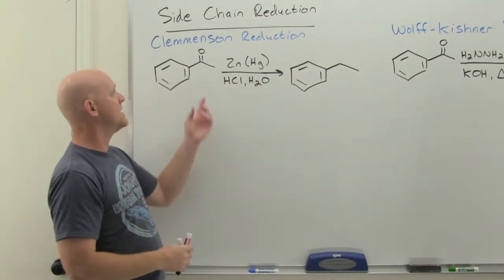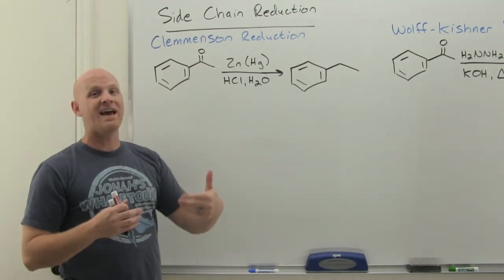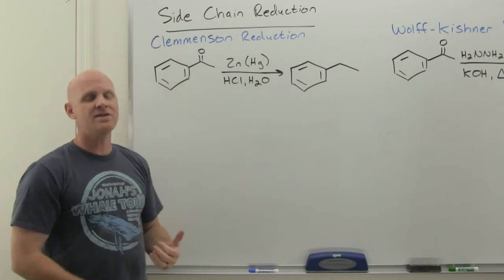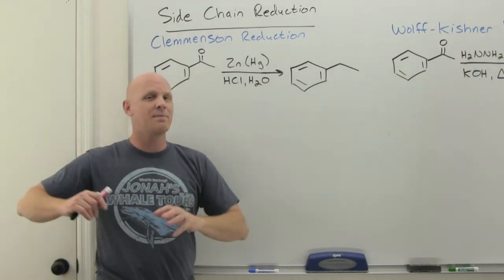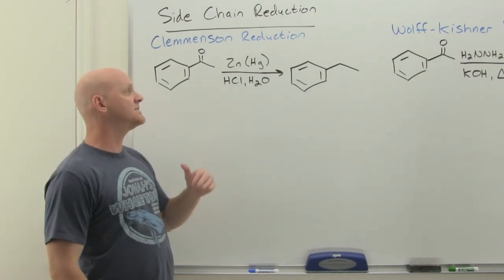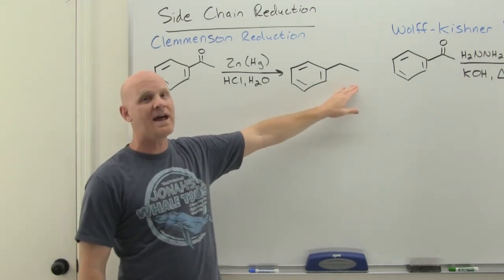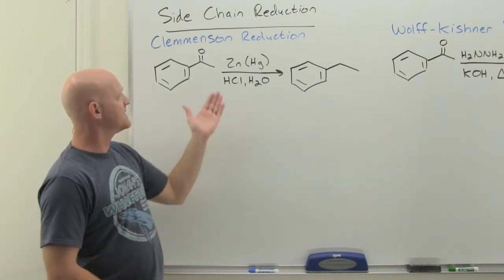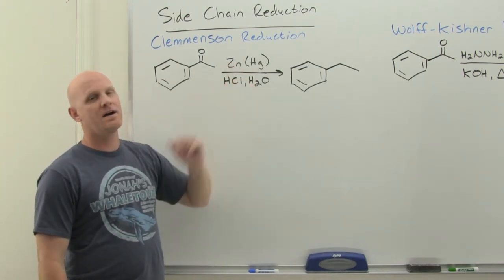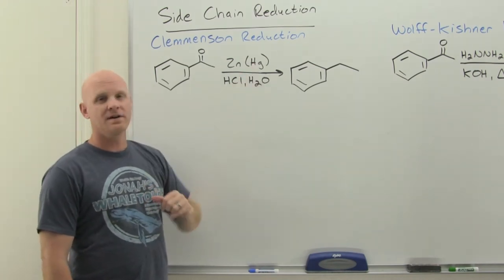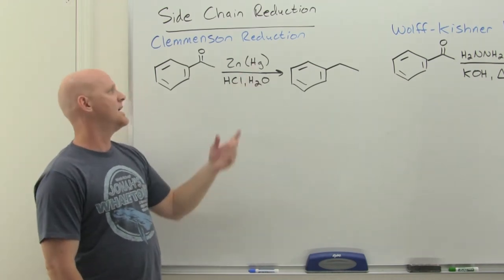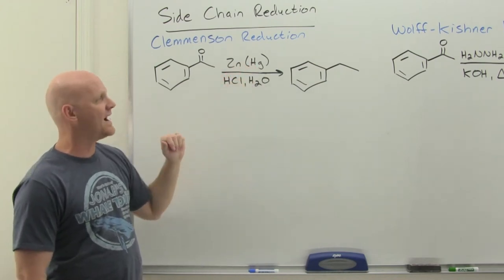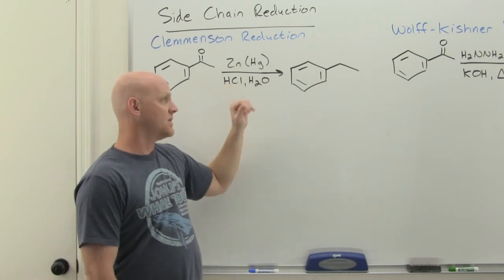The Clemmensen reduction is the reduction of a ketone or aldehyde specifically all the way to an alkane — complete deoxygenation, going from a ketone to an alkane. This works with any ketone or any aldehyde. The relevance in this chapter is that the result of a Friedel-Crafts acylation is going to be a ketone or aldehyde right on that benzylic carbon, and this reaction will reduce it all the way to an alkane. In the Clemmensen reduction, we use a zinc amalgam — a combination of zinc and mercury — along with aqueous hydrochloric acid. So it's acidic.